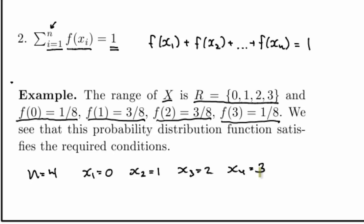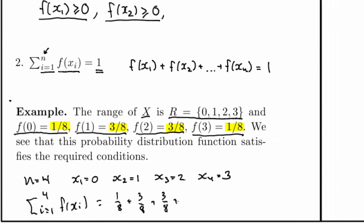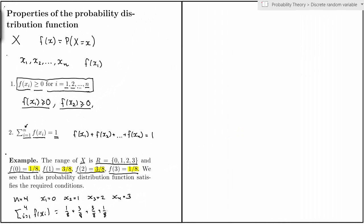I can check that every probability is greater than or equal to 0. All these are numbers that are not negative, so the first condition is satisfied. If I calculate sum i go from 1 to 4, f of xi, I get 1 over 8 plus 3 over 8 plus 3 over 8 plus 1 over 8, and that is precisely equal to 1.